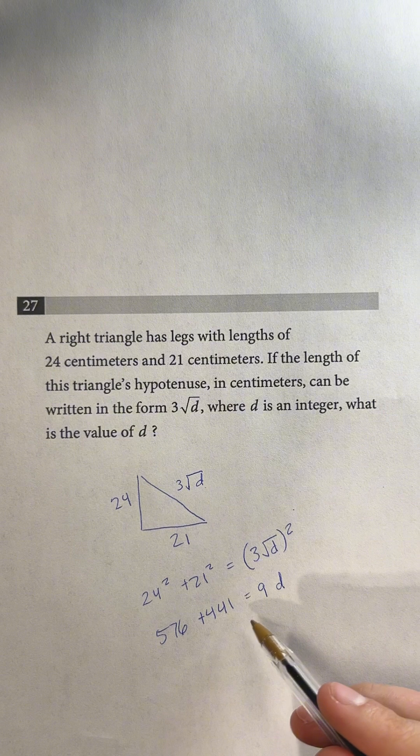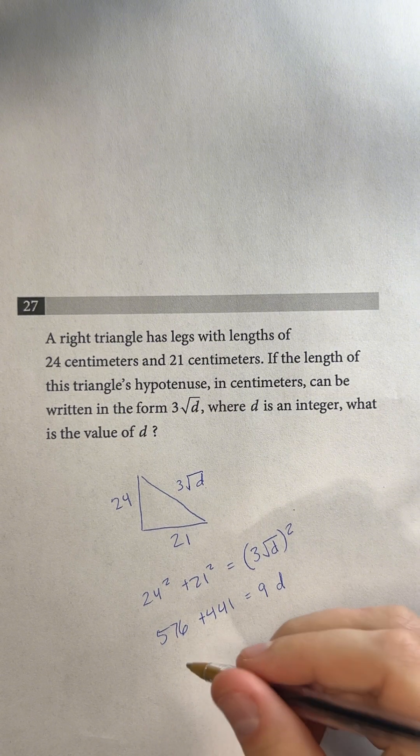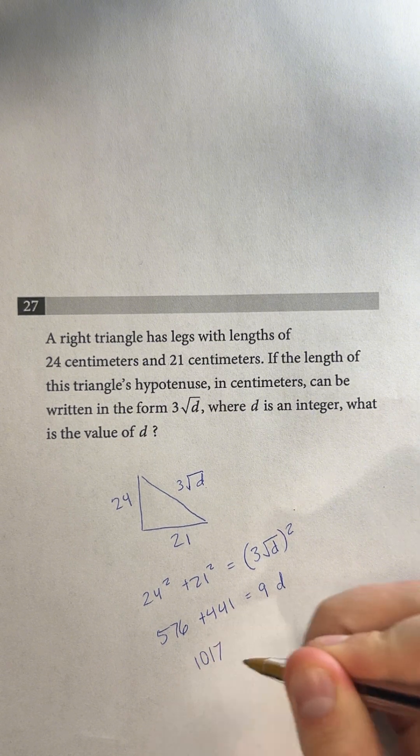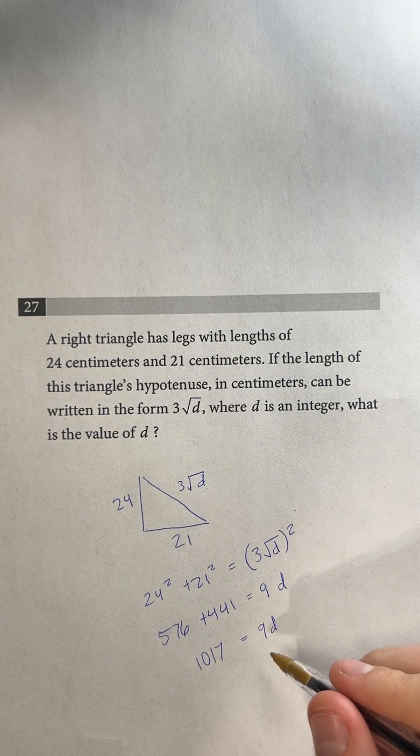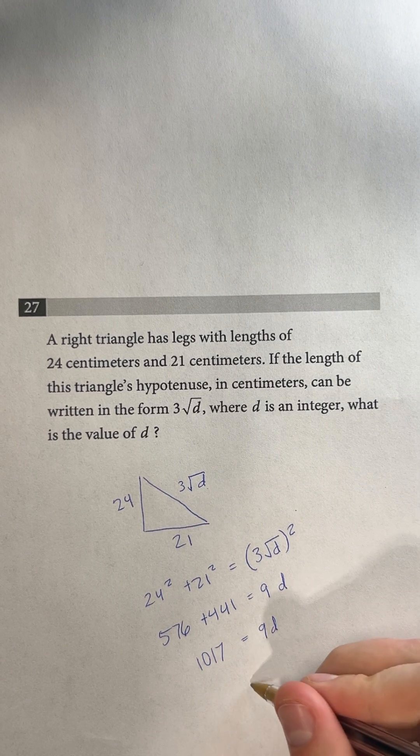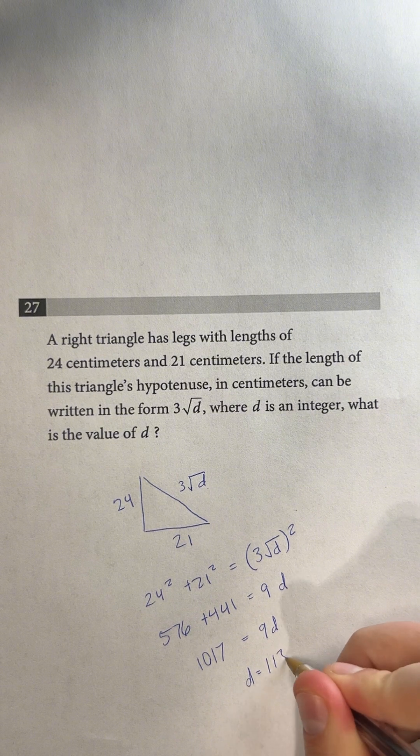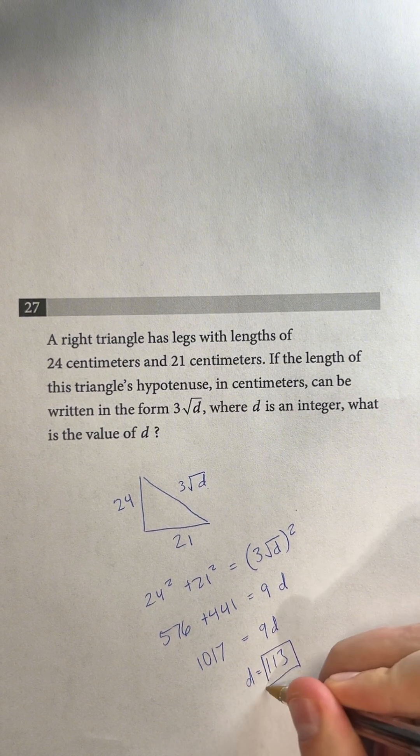So we have this equation here. When we simplify this left side, we end up with 1017, which once again is going to equal 9d. And then when we divide both sides by 9, we're going to end up with d equals 113. And so that is going to be our answer.